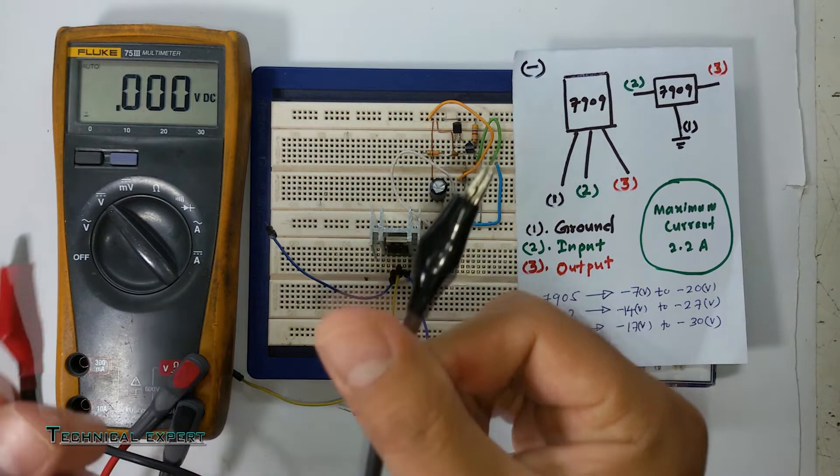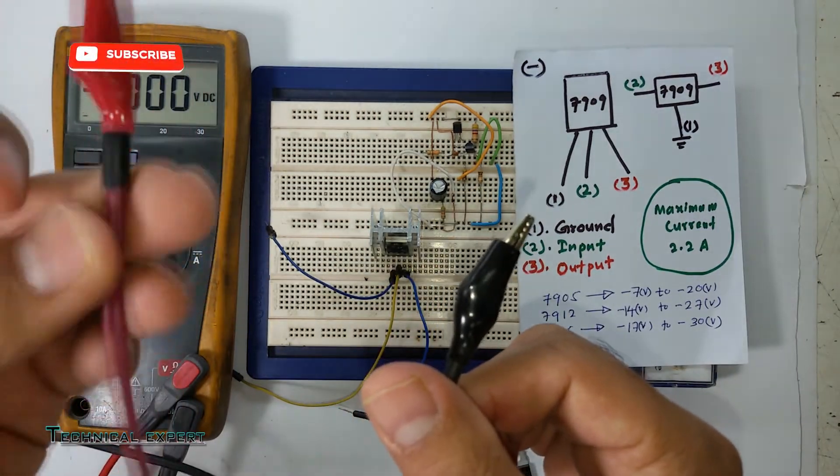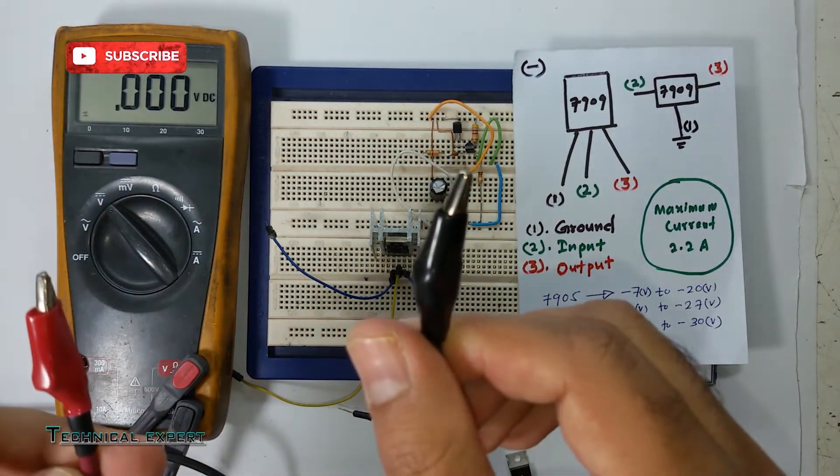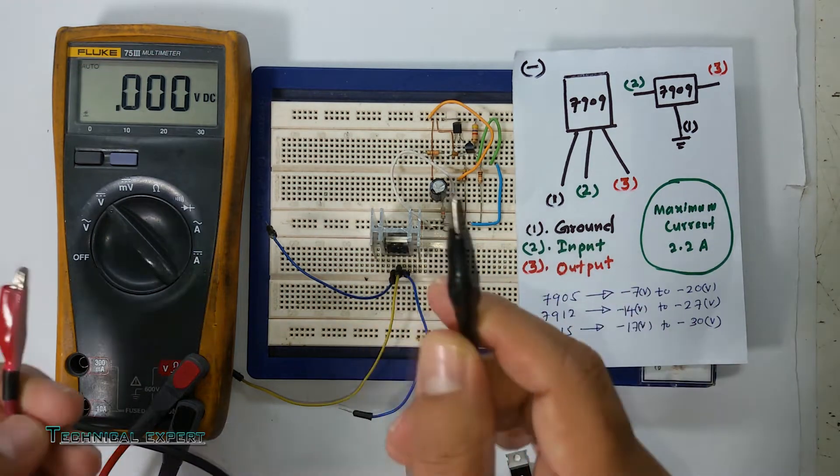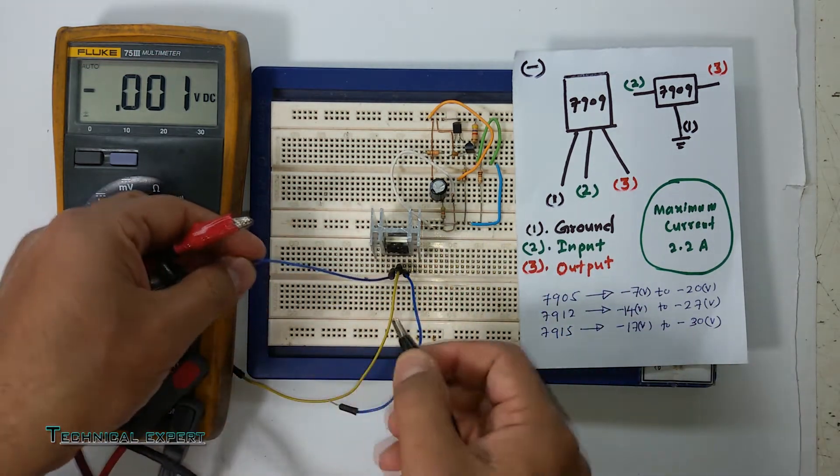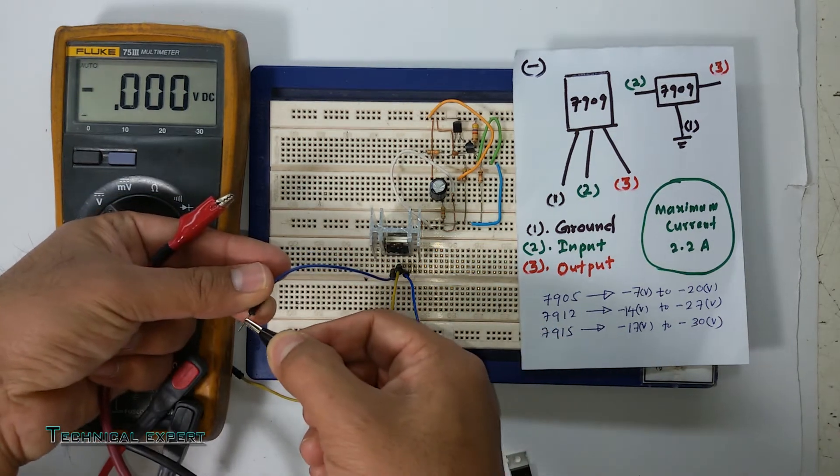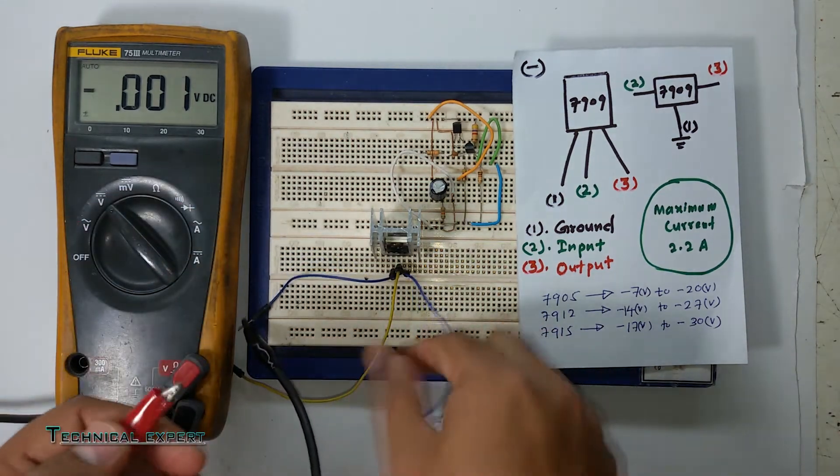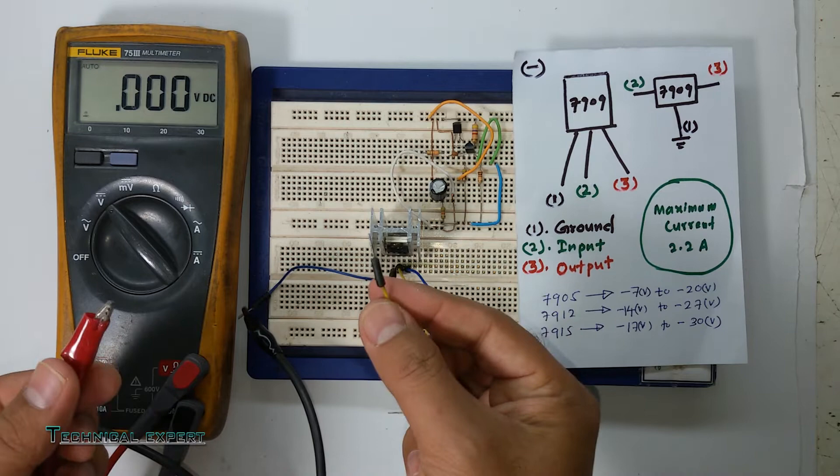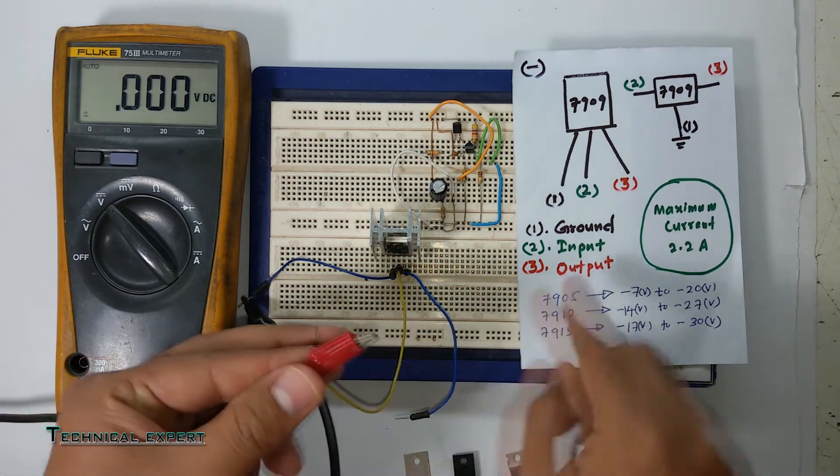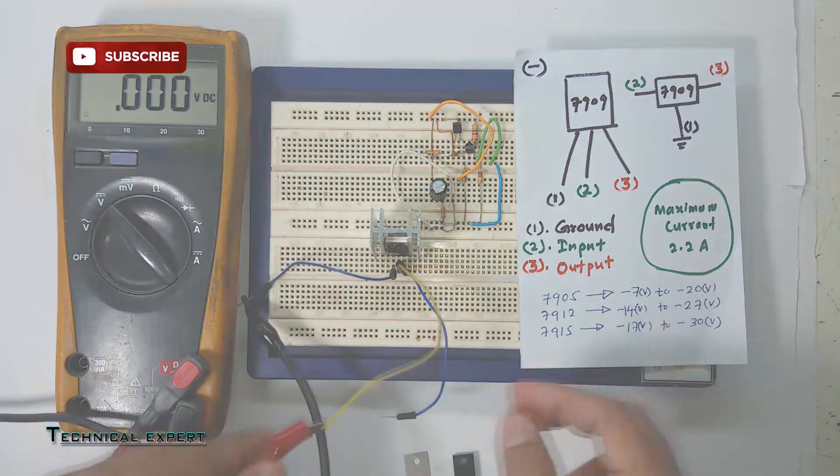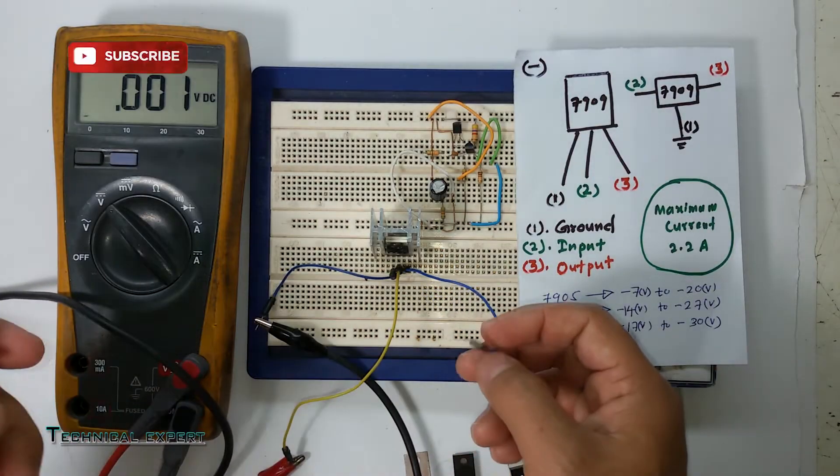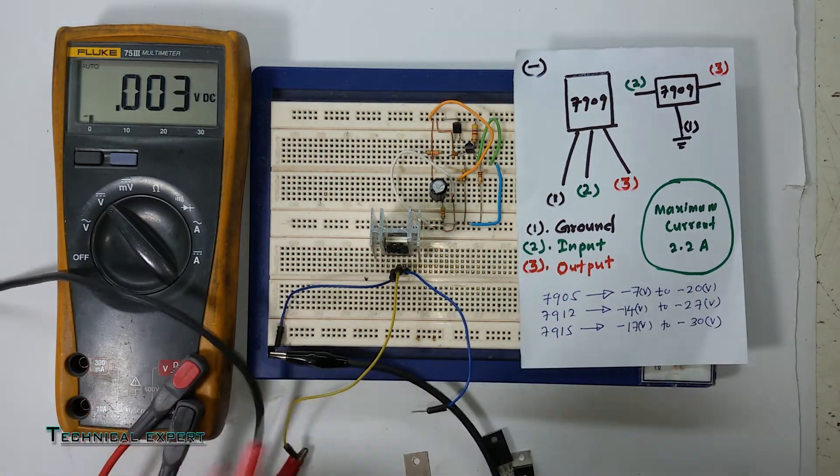This is ground (minus), this one is plus. Ground is pin number one, this is pin number two for input. We are applying positive here, and we will get the output from pins one and three.